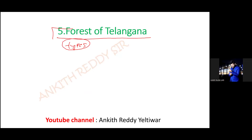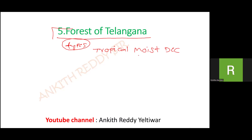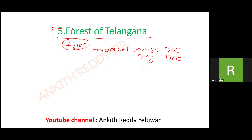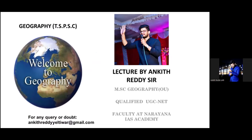In Telangana, the types of forests are: tropical moist deciduous, tropical dry deciduous, and thorn forest. Thorn forest is basically found in the southern and western part of Telangana. Moist deciduous is in the north-eastern part. That is what we were discussing in the last class.